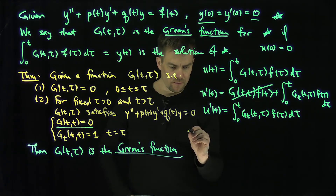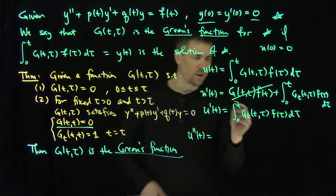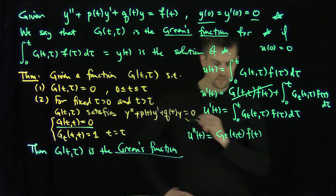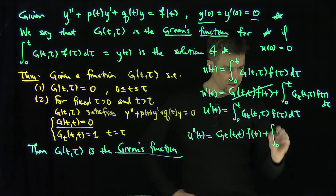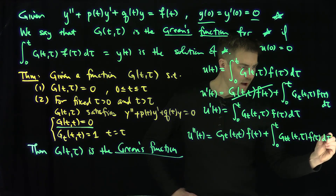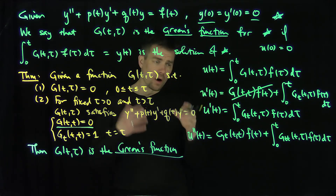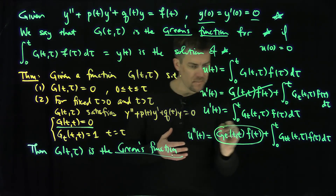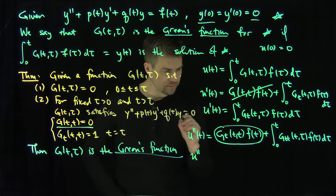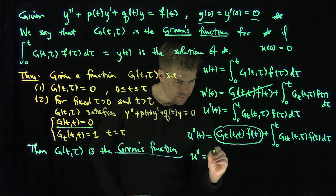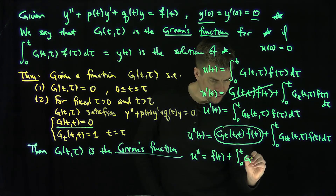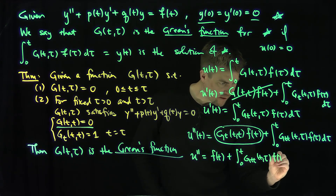The second derivative u''(t): applying the same rule, I plug in t to get g_t(t, t) · f(t) plus the integral from 0 to t of g_tt(t, τ) · f(τ) dτ. We know that g_t(t, t) = 1 on the diagonal, so u''(t) = f(t) + ∫₀ᵗ g_tt(t, τ) · f(τ) dτ.